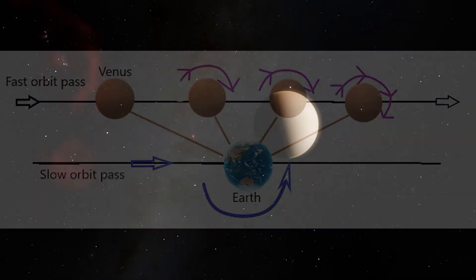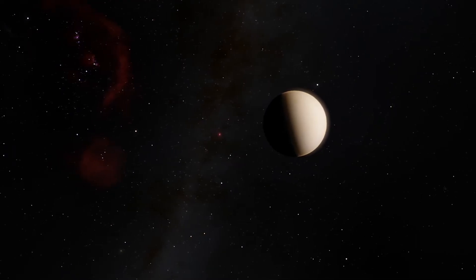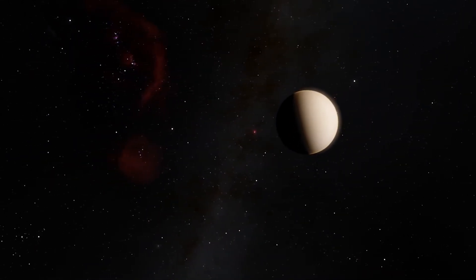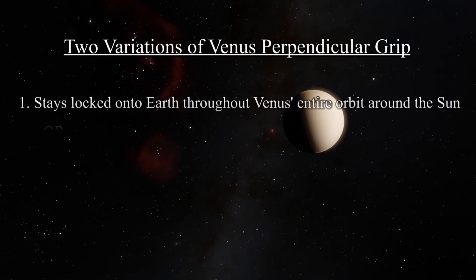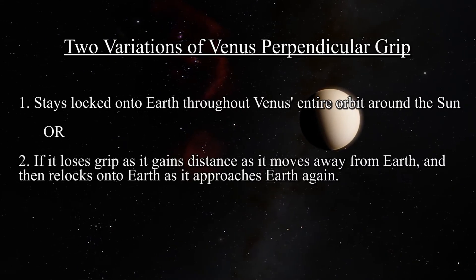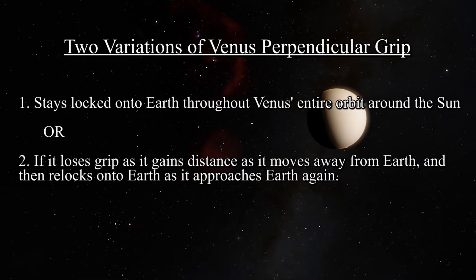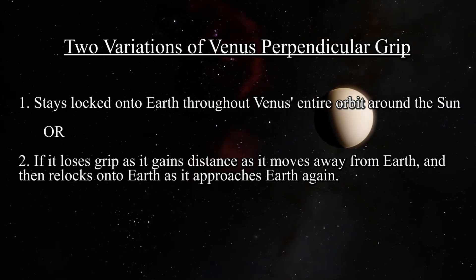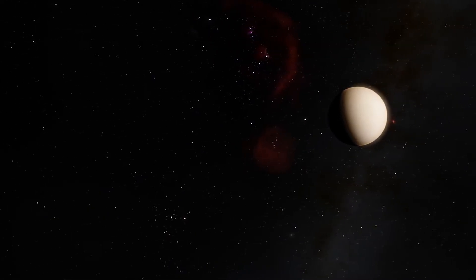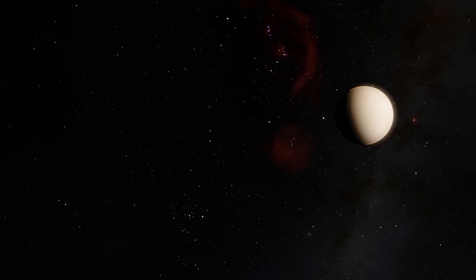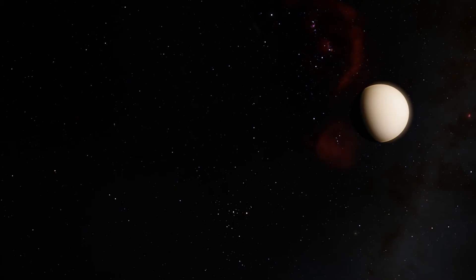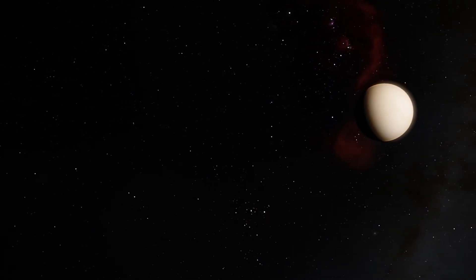There are two variations of Venus's perpendicular grip. It is not clear if the gravitational perpendicular axis lock onto Earth: one, stays locked onto Earth throughout Venus's entire orbit around the sun, or two, if it loses the grip as it gains distance and then re-locks onto Earth as it approaches again. That is left to be discovered. These two variations are very similar, but further analyses need to be done to determine which is more accurate.